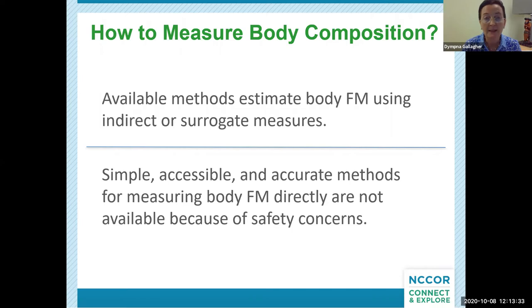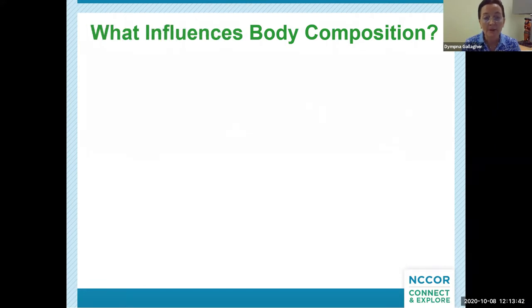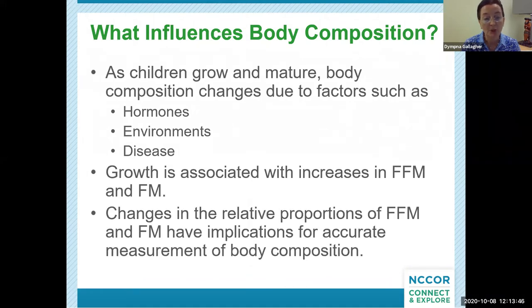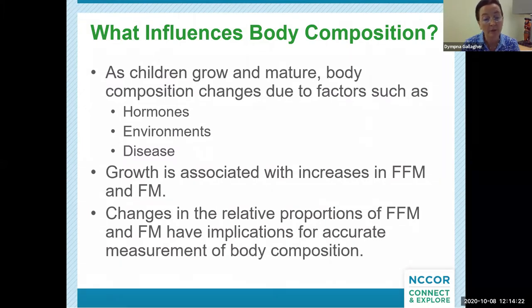What influences body composition? Body composition changes as children grow and mature. Many factors influence these changes, including hormonal, environmental, and disease processes. Growth is associated with increases in fat-free mass and fat mass, and changes in the relative proportion of these body components have important implications for accurate measurements. The timing and distribution of changes in fat mass also has important implications for current and future health, including the risk of developing adult obesity and various metabolic complications such as insulin resistance, type 2 diabetes, high blood pressure, and abnormal blood lipids.